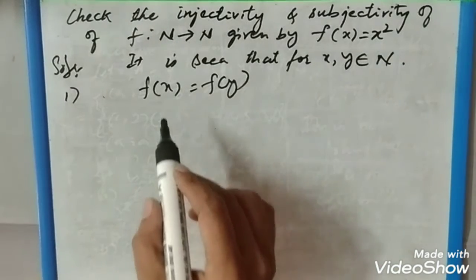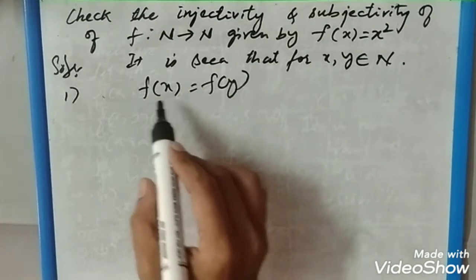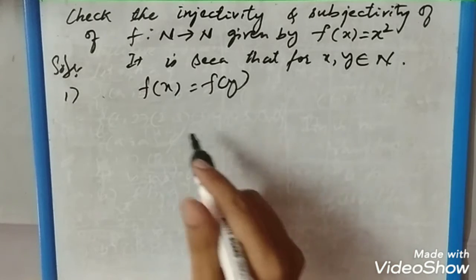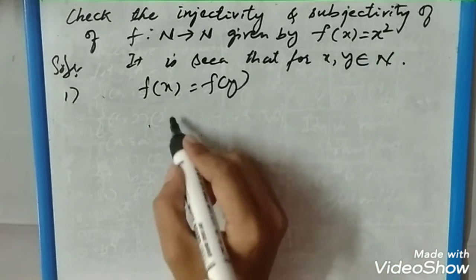Injectivity is also called a one-one function. We have the relation f(x) = f(y). So we have the function x², and if it is y, then it is y². This will be the same as x = y.